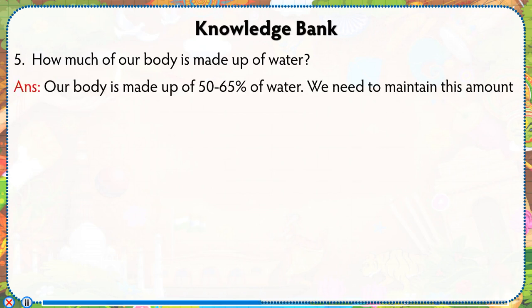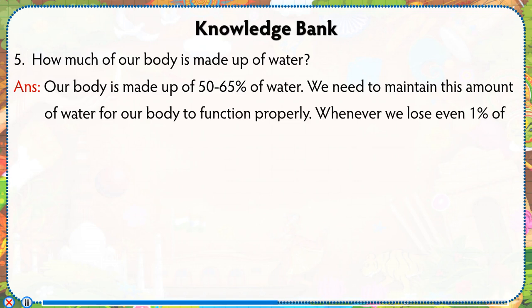How much of our body is made up of water? Our body is made up of 50–65% of water. We need to maintain this amount of water for our body to function properly. Whenever we lose even 1% of our total body water, we start feeling thirsty.